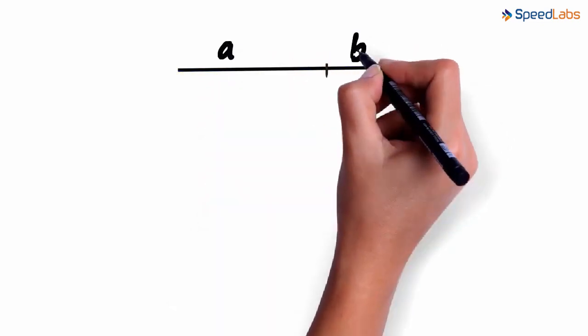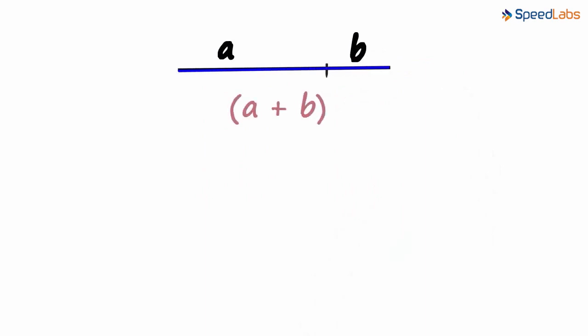We draw a line of any length and mark a point on it. This point can be marked anywhere on the line. We name the parts a and b. This length will be a plus b.